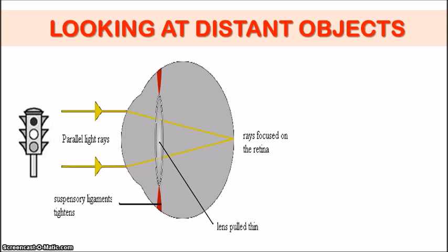Remember, the light rays are more spread out when you're looking at objects close to your eyes. But because of the distance of the object, the light rays are more parallel and they do not require as much bending in order to focus on the retina. So as a result, you will see that the lens is actually pulled thin in this case. The thinner the lens, the less refraction would occur. And in order to get the lens pulled thin, the suspensory ligaments tighten — think of it as like a rubber band pulling the lens thin.